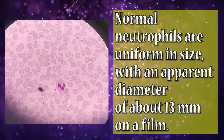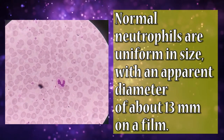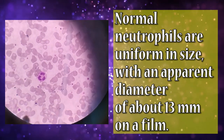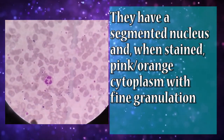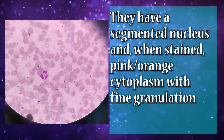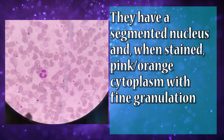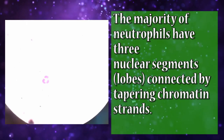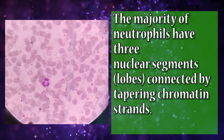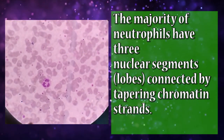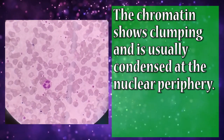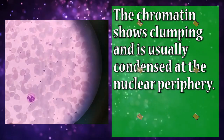Neutrophils are uniform in size with an apparent diameter of about 13 micrometres on a peripheral blood smear. They have a segmented nucleus and a pink-orange cytoplasm with fine granulation. The majority of neutrophils have three nuclear segments — i.e., loops — connected by tapering chromatin strands. The chromatin shows clumping and is usually condensed at the nuclear periphery.